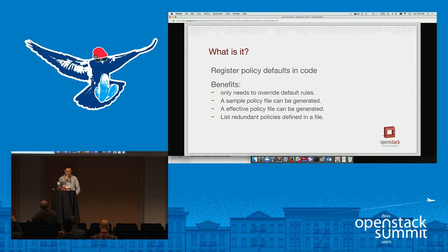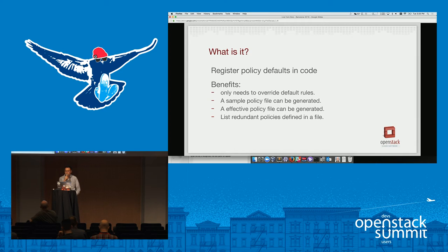There are some benefits to policy in code. The first is that deployers only need to provide a policy file if they want to override something — if they don't want to override the default rules, they don't need to provide a policy file at all. In the Newton release, you can generate a sample file with a tool so you can know exactly what rules are checked in the code. We also provide a tool to generate an effective policy that combines the default rules and the rules loaded from the policy file — we call this the effective policy rule. Additionally, you can list redundant policies defined in the file and remove the duplicate ones.